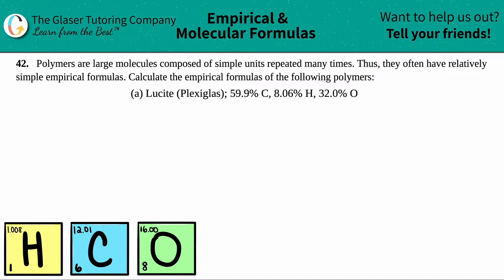Number 42. Polymers are large molecules composed of simple units repeated many times, so they often have relatively simple empirical formulas. Calculate the empirical formulas of the following polymers. We have lucite, also known as plexiglass, which is 59.9% carbon, 8.06% hydrogen, and 32.0% oxygen.